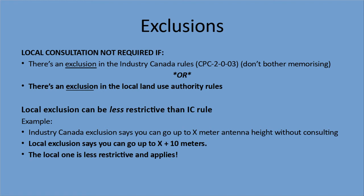The local exclusion can be less restrictive than the Industry Canada rule. For example, if Industry Canada says you can go up to X meters antenna height without consulting, they can't stop you from putting up that antenna. But if the local exclusion says you can go up to X plus 10 meters, they can't put a limit of less than X meters. If Industry Canada says you can go to X meters and the local municipality says you can go higher than that, go for it. So the local rule can only be less restrictive — and that's what applies.